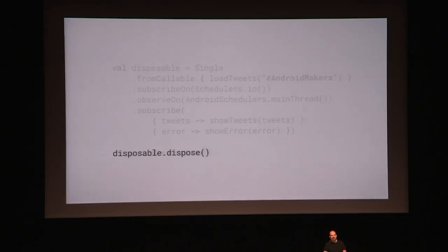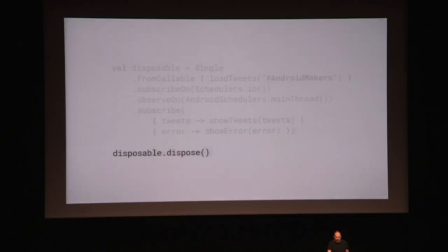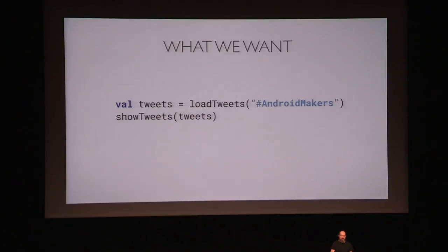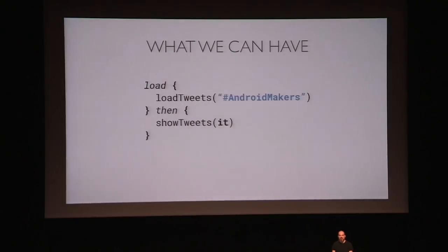Can we maybe make this easier so that anyone who wants to load data or run things in the background doesn't have to think about all these things? Could we simplify it? What we would like is something where you just call load tweets, send in the query, get the list of tweets, and show it on the UI — you shouldn't really have to care about what thread you're running on. We can't have exactly that, but we can have something very close. That's what we're going to do today — create a DSL with a nice, easy-to-read syntax that doesn't require thinking about threads explicitly.